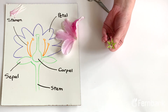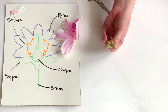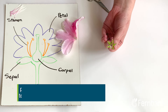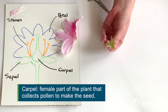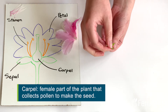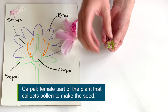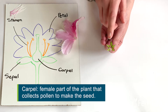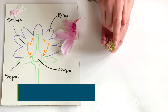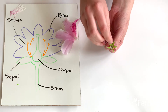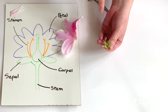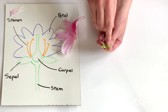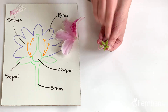Then what's left here in the middle is called our carpel, and that's the female part of the flower. Here the pollen gets delivered — it goes down to the very bottom and that's where the seeds are produced.